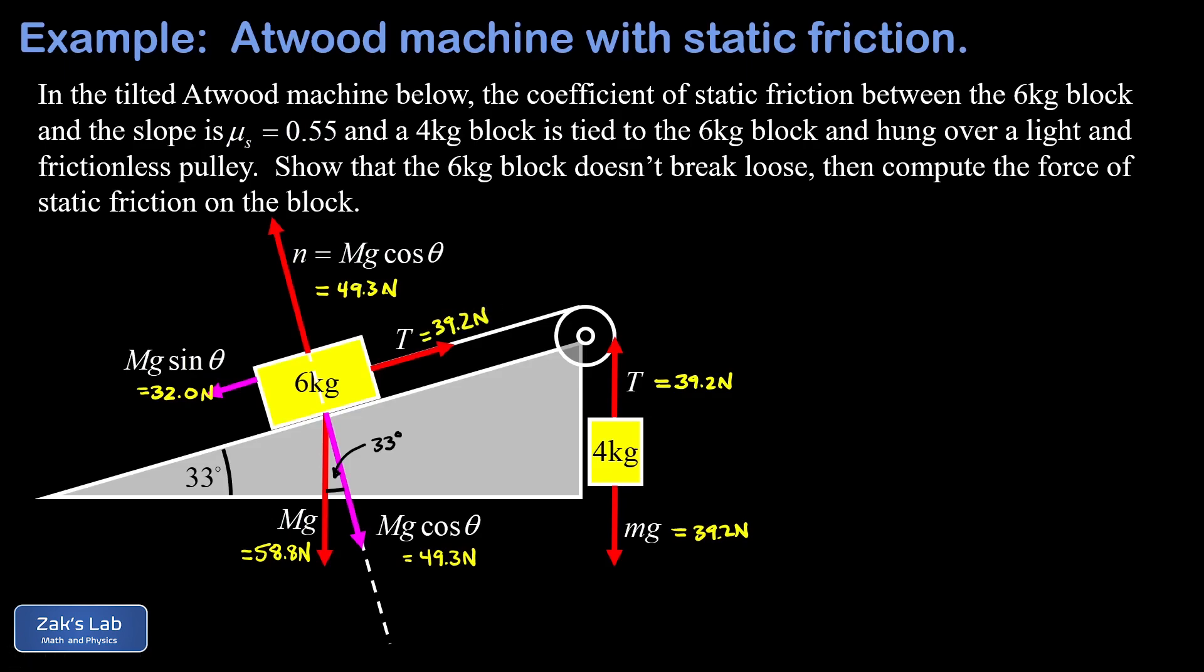And now I noticed that my two forces pulling parallel on the six kilogram block. Well, the tension is bigger than the parallel component of gravity. It's pulling up at 39.2 newtons while gravity pulls down the ramp with 32 newtons. This means to keep the block stationary, the static friction force must be pointing down the ramp. So we've made some progress here. We figured out the direction of the static friction force.